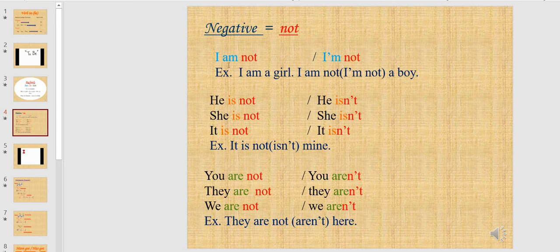The short form of I am not is I'm not. For example: I am not a boy, I am a girl. He is not — the short form is he isn't. She is not — she isn't. It is not — it isn't. For example, if someone asks: is this book yours? Is it yours? I will say: no, it is not mine. It isn't mine.